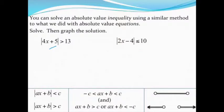Once they are, we can go ahead and split into our two separate inequalities. One of them is going to be the exact same as the beginning, just drop the bars, so we get 4x plus 5 has to be greater than 13.